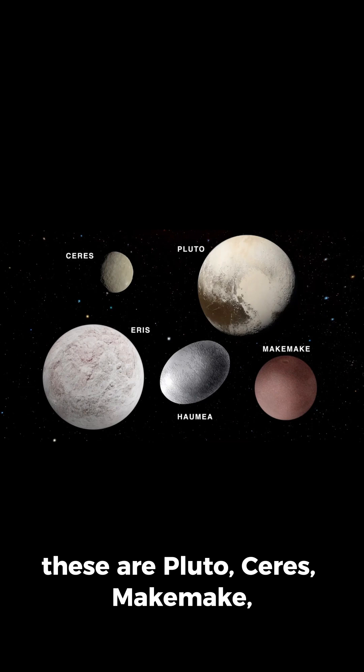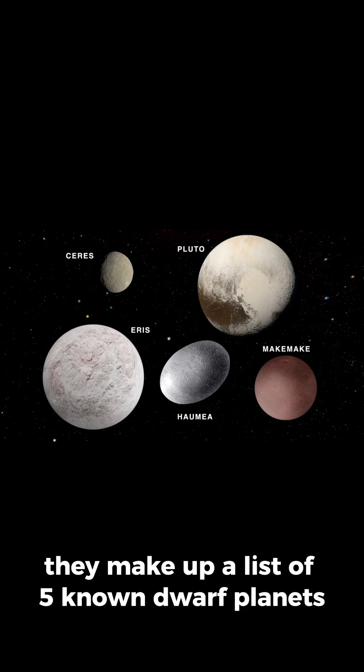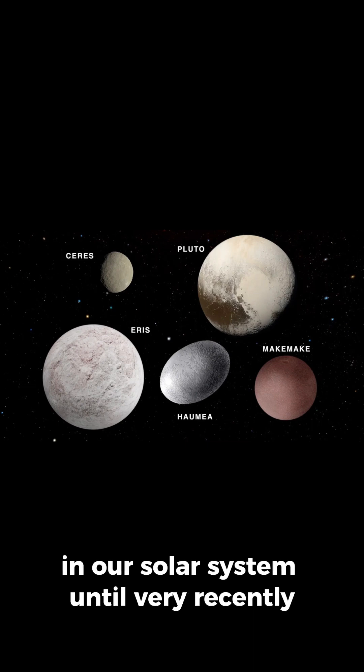These are Pluto, Ceres, Makemake, Haumea, and Eris. They make up a list of five known dwarf planets in our solar system until very recently.